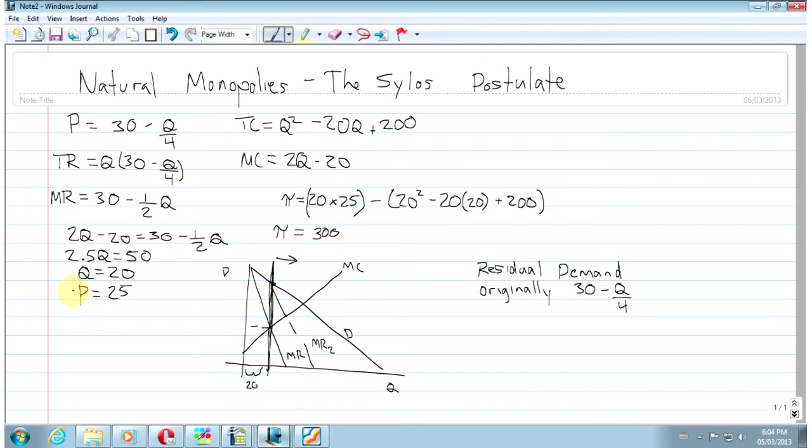And the intercept takes over from the maximum willingness to pay of people who aren't in the market, which just happens to be this price right here. So residual demand is going to be 25 minus the same slope, minus Q over 4. So all you have to do is take the original maximum willingness to pay and substitute for the price that the original monopolist is charging. And that will give you residual demand. That's all there is to it.